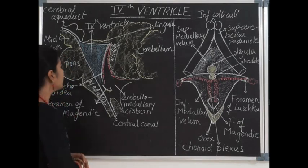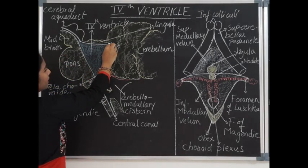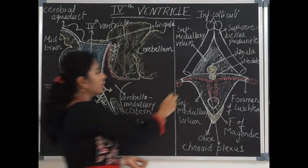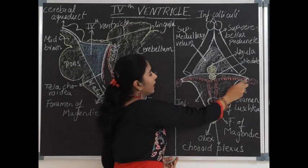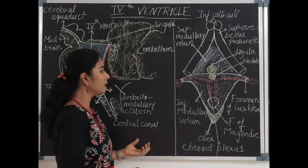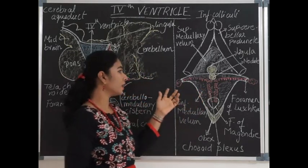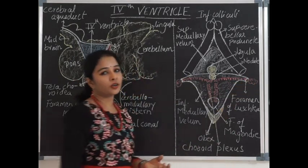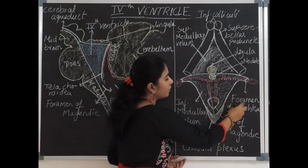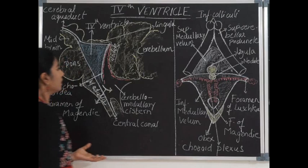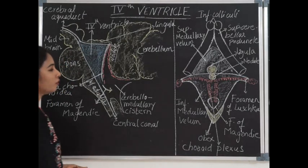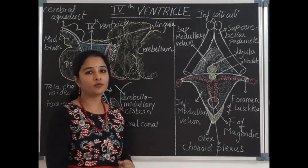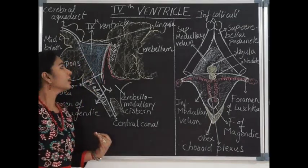The recesses are extensions of the fourth ventricle. There is one dorsomedial recess which extends into the core of the cerebellum along its roof. The other two are lateral recesses, which extend laterally till the cerebellopontine angle near the inferior cerebellar peduncle on either side. These lateral recesses open into the subarachnoid space through openings called the foramen of Luschka. There are also two dorsolateral recesses related near the inferior medullary velum, which are blind recesses.